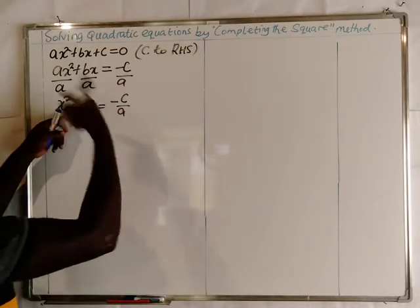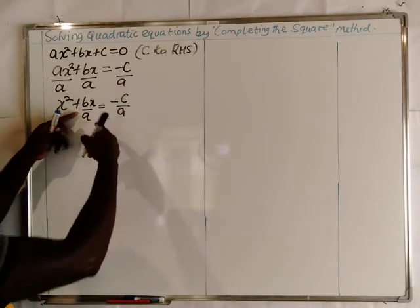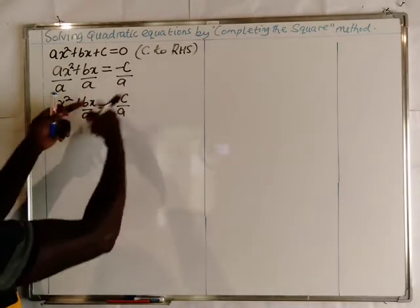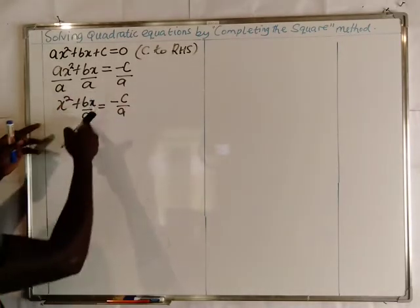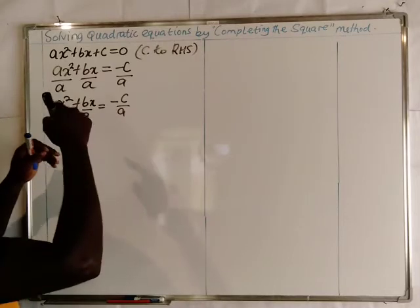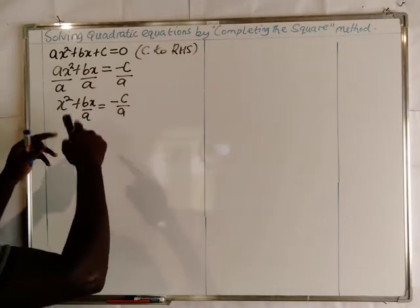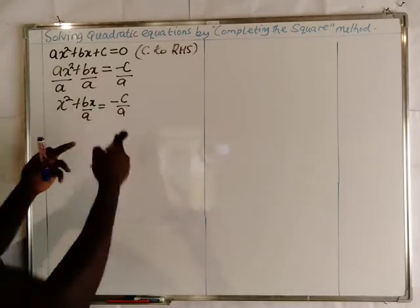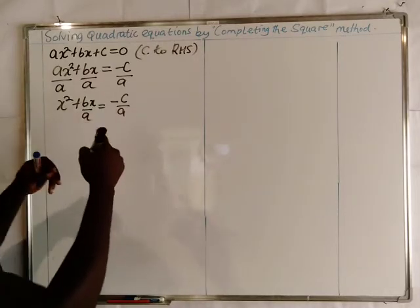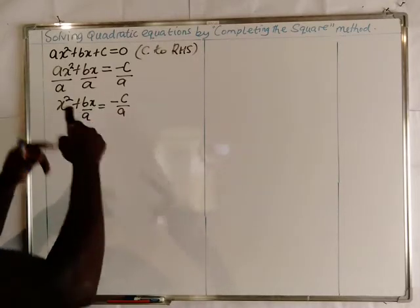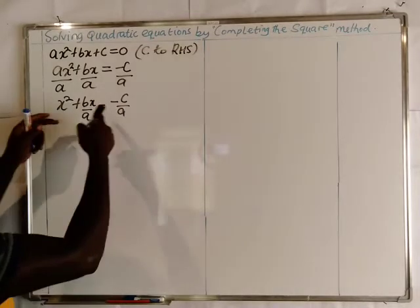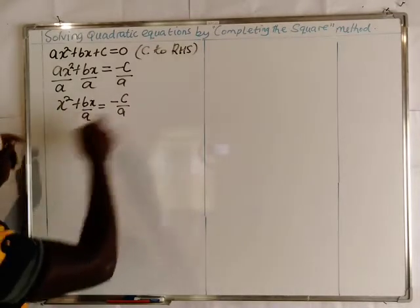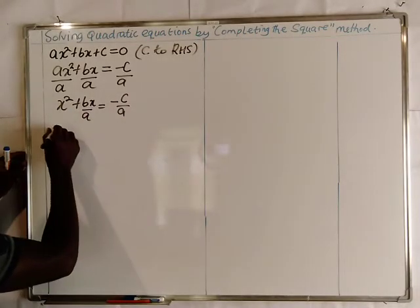We take half of b over a, which is b over 2a, and we square it to get b squared over 4a squared. We then add this to both sides of the equation.